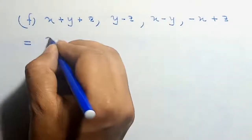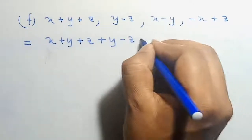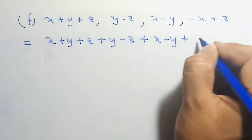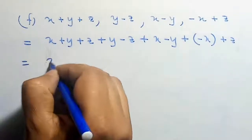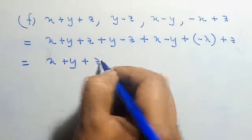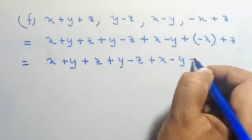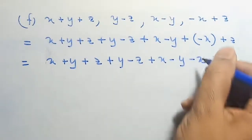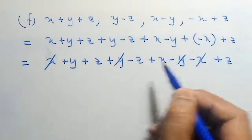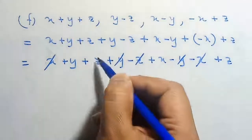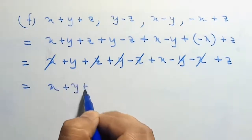According to the next equation: (x plus y plus z) plus (y minus z) plus (x minus y) plus (minus x plus z). Collecting terms: x plus x minus x gives x. y plus y minus y gives y. z minus z plus z gives z. This x and this x cancel, this y and this y cancel, this z and this z cancel. Finally, the answer is x plus y plus z.